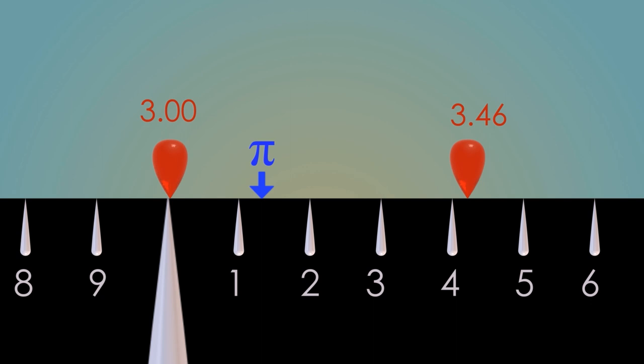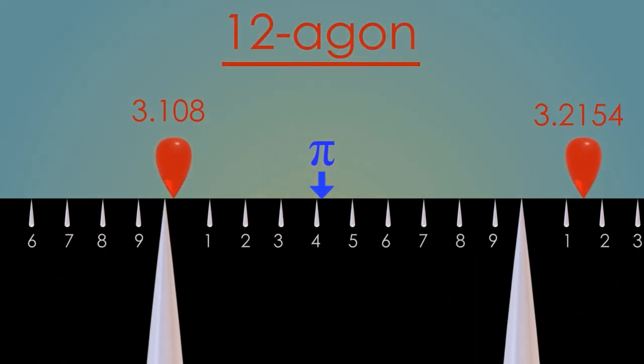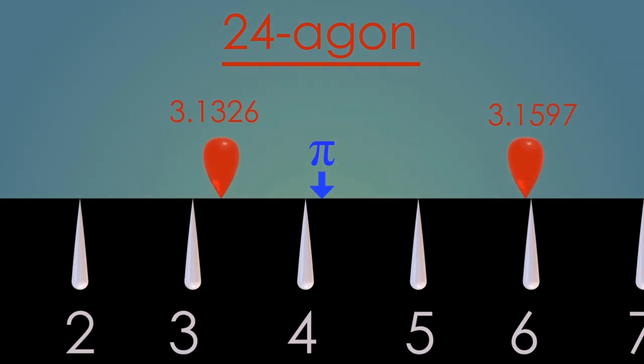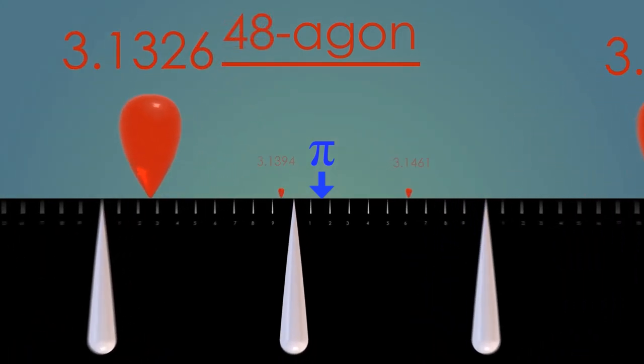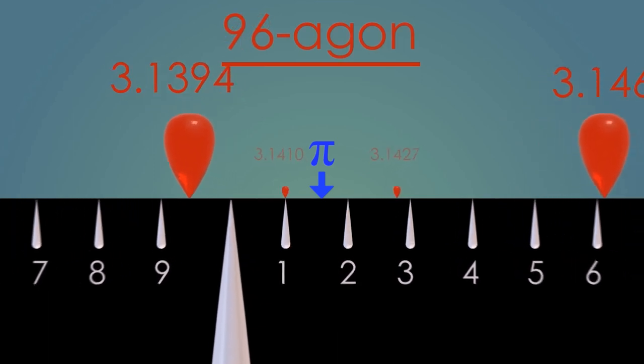If we wanted to get more digits of pi, we could start over with a ten-sided polygon. But it turns out there's a trick to this. Archimedes realized that if you have an estimate from a six-sided polygon, you can go directly from these numbers to the numbers you'd get if you calculated the circumference of a polygon with twice as many sides. We can go from a 6-agon to a 12-agon, and this procedure can be applied over and over again. From a 12-agon to a 24-agon, to a 48-agon, to a 96-agon.